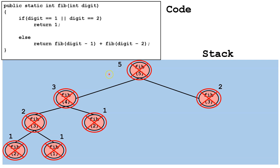Depending on the problem you are using, you may not be able to simply fill in other parts of the tree — you may have to draw additional branches. It's always valuable to see if there are values already calculated and fill those in on other branches. Also, remember you're not always going to be adding the two calls together — you could be subtracting them, multiplying, dividing, or doing some other operation.